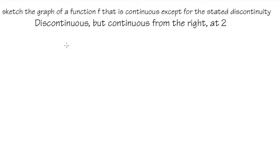For this question, we are going to sketch a possible graph for the function so that it is discontinuous, but continuous from the right at 2. And when the question says at 2, that means x is equal to 2. So it tells us the location of the discontinuity for the x value.